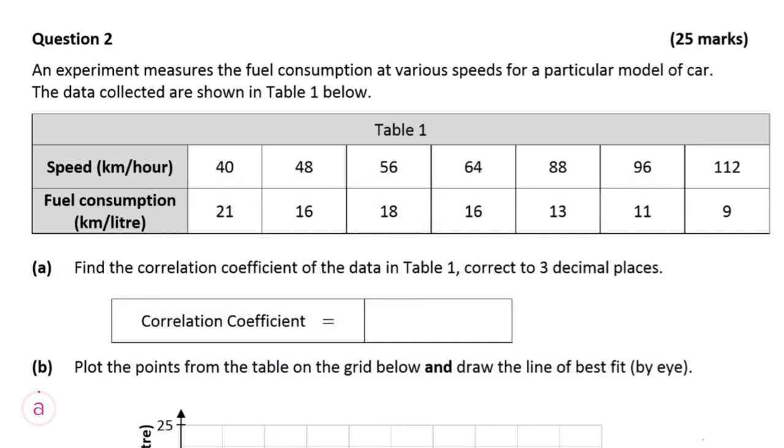Okay, so here's our question. We're told that an experiment measures the fuel consumption at various speeds for a particular model of car and that this information is given in Table 1. As we can see, as the speed increases, the amount of kilometers we get out of each liter of fuel decreases. So the way to interpret this is basically the faster you travel, the more liters you're going to need to complete your journey. And part A asks us to find the correlation coefficient of the data in Table 1, correct to three decimal places.